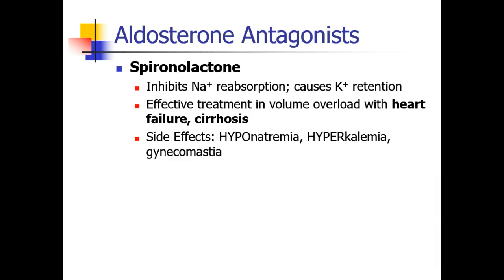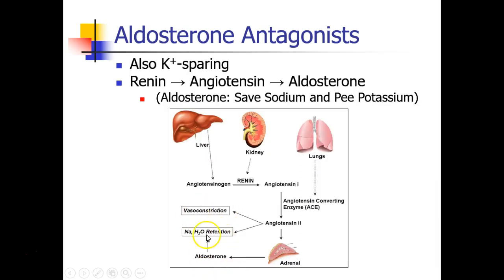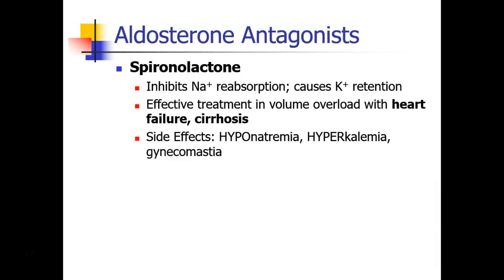Spironolactone is one of the most common aldosterone antagonists. By inhibiting aldosterone, it blocks aldosterone's effect on its target organs — inhibiting reabsorption of sodium and causing retention of potassium. Drugs like spironolactone are commonly used in patients with volume overload due to heart failure or cirrhosis. Side effects include hyponatremia, hyperkalemia, and also gynecomastia — enlargement of breast tissue in both men and women — probably due to the fact that aldosterone is a steroid and there may be some effect on steroid hormone receptors.